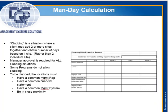Another term we have to talk about is clubbing. Clubbing is a situation where a client may have two or more sites that they want to band together to obtain a reduction in the number of days. Almost always, if you quote a site separately based on the employee count, it's going to be more expensive than if you join two together. Manager approval is required for all clubbing situations and some programs don't allow it. For locations to be clubbed, they have to have a common management rep, a common financial system, a common management system, and they need to be in close proximity.